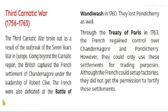Now the British agreed to give back Chandranagore and Pondicherry to the French. However, they could only use these settlements for trading purposes only. The French could set up factories but they could not administer or take control — all this would be under the control of the British. So the French were not very happy, but through the battle they had lost their power and slowly they vanished from India, and the British took political power over South India.